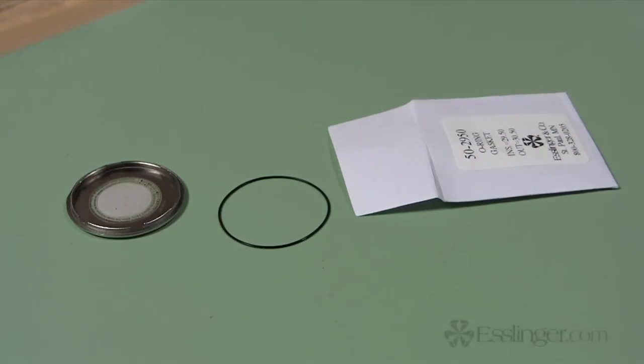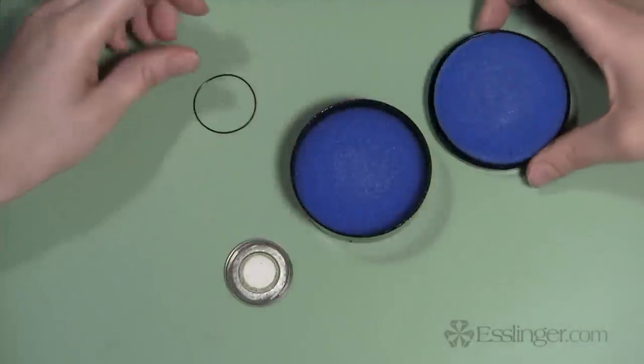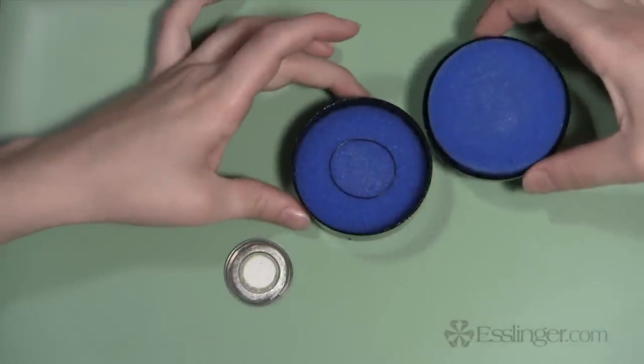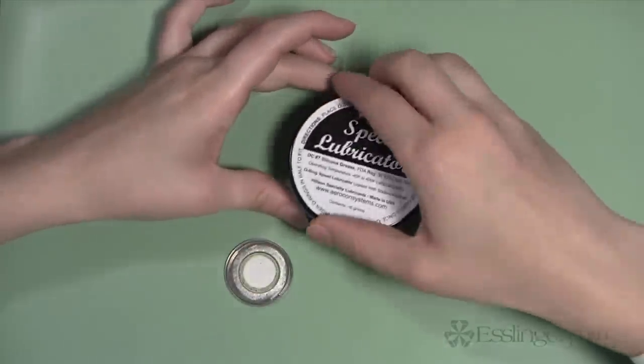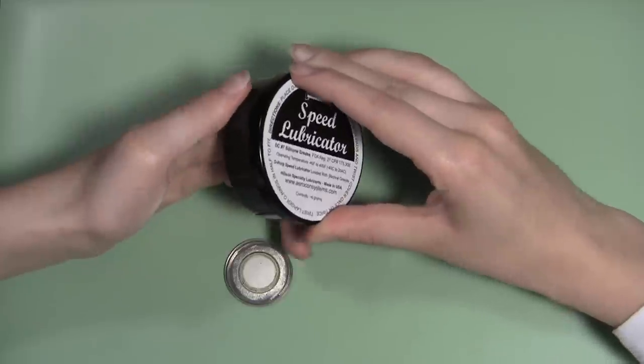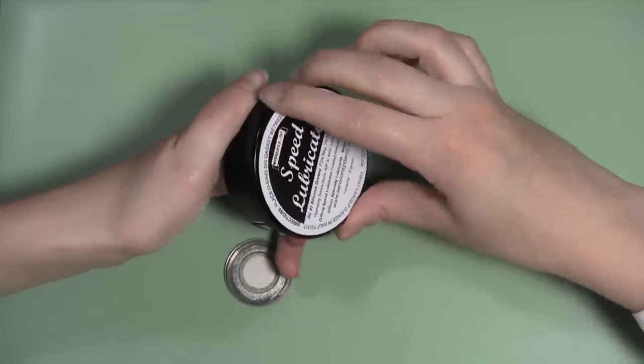However, first you must lubricate the gasket to ensure a tight seal. Place the new gasket in the silicone sealant box. Close the box and twist the lid to ensure the gasket is liberally coated with grease. This will extend the life of your gasket and improve the watch case's seal, keeping out dirt and moisture.